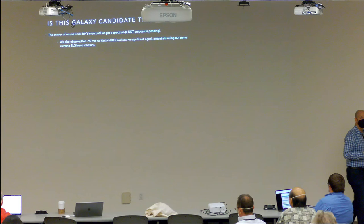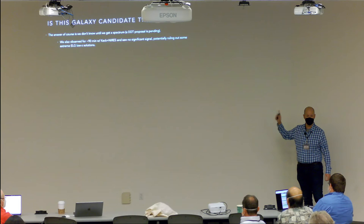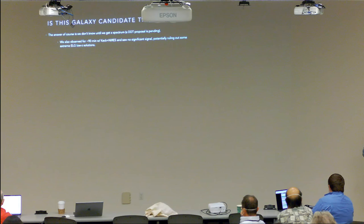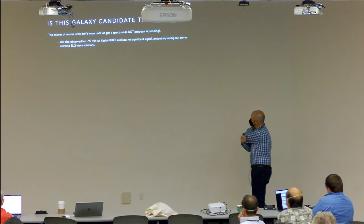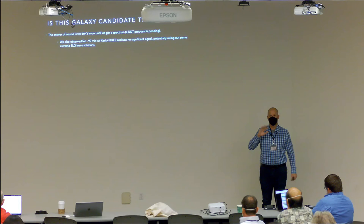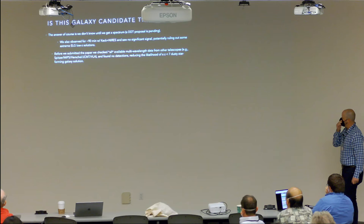Is this galaxy really at redshift greater than 10? I'm still fairly convinced yes, but we won't know until we get a spectrum. We need spectroscopic redshifts to confirm all the very high-redshift galaxies we're seeing. We've put in a DDT proposal; our galaxy and the Callum Donnan redshift-17 candidate are within one NIRSpec MSA pointing. We also observed it for 90 minutes with Keck/NIRES during engineering time and saw nothing, which at least rules out a low-redshift extreme emission line galaxy solution.